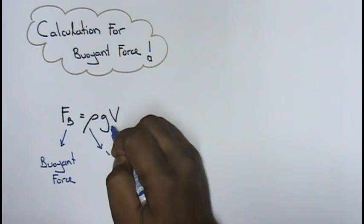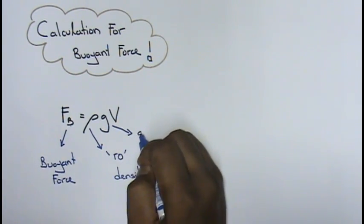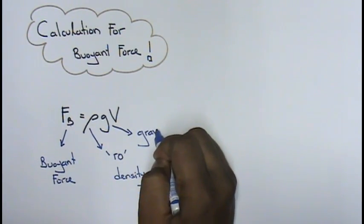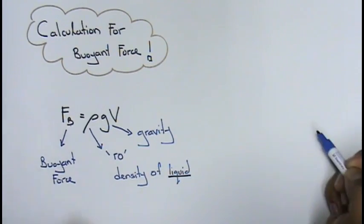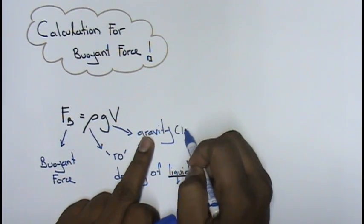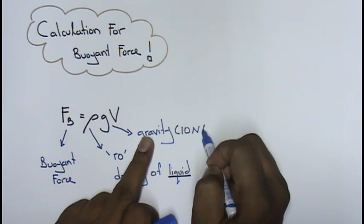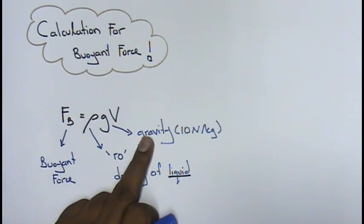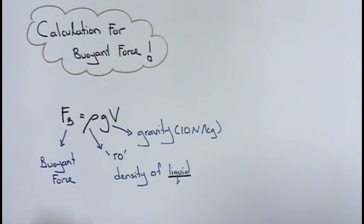Your G over here stands for gravity, and normally the value for gravity is given. If it's not given over here, assume 10 newtons per kilogram. If it's not given, assume this.